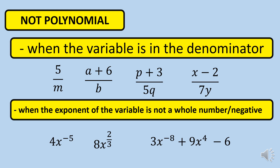Next, you have 3x raised to negative 8 plus 9x raised to 4 minus 6. One of the terms has a negative exponent. If even one term has a non-whole number or negative exponent, this expression is classified as a non-polynomial.